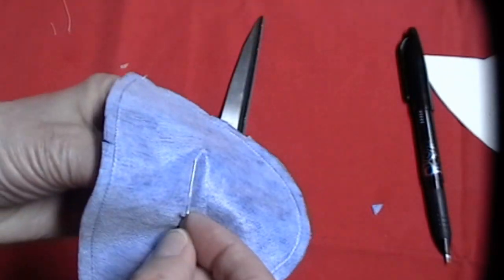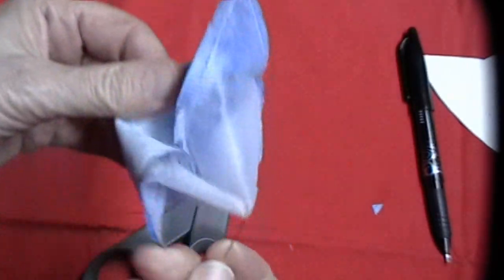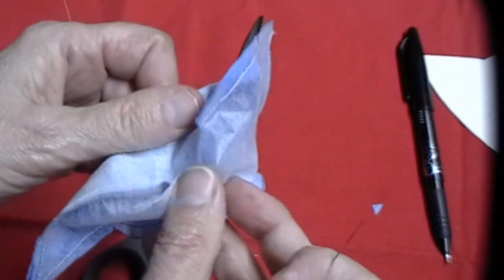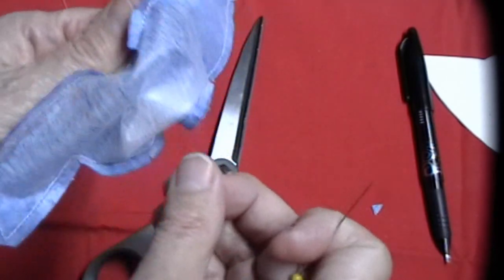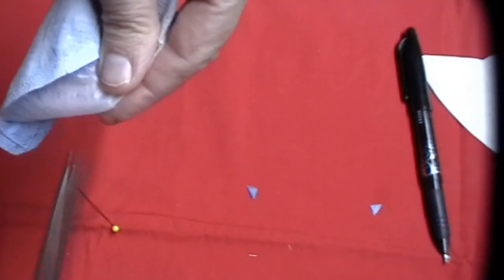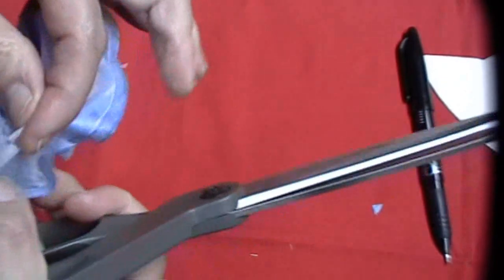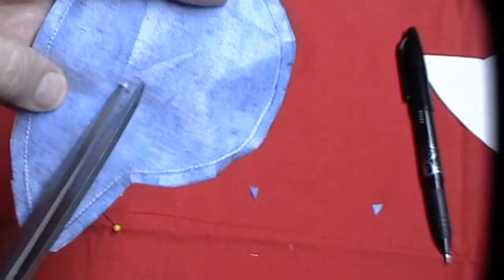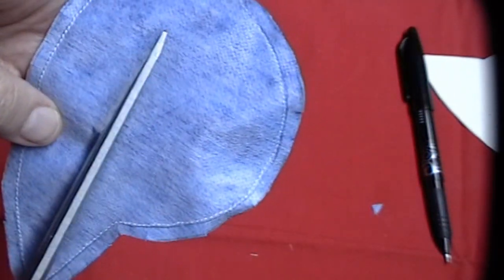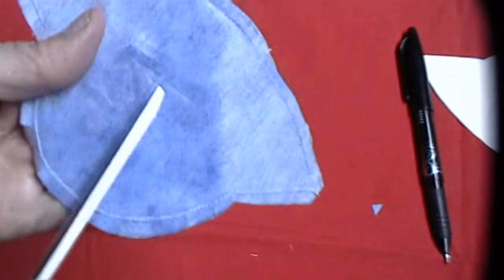You're going to pull the interfacing away from your fabric. And what you're going to do is you're going to make a little snip and then insert your scissor and make a cut but not too close to either side. You're going to make a little opening here.